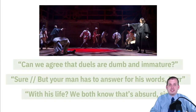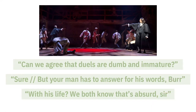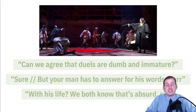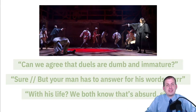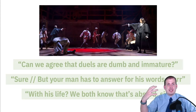In the musical Hamilton, they make fun of this idea. Aaron Burr and Alexander Hamilton say they can agree that duels are dumb and immature, and Hamilton says, 'Sure, but your man has answered for his words with his life — we both know that's absurd.' Everybody knew this was an inefficient system, but they were still locked into it because the shaming that came from violating informal institutions was very strong.